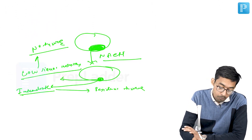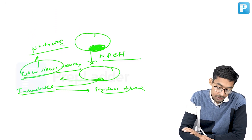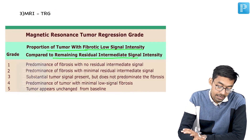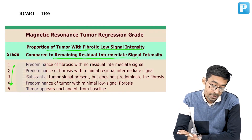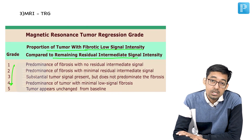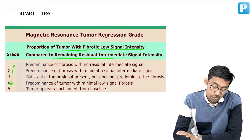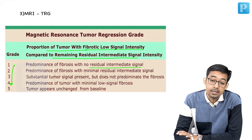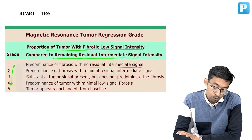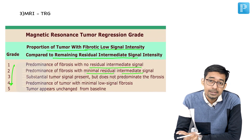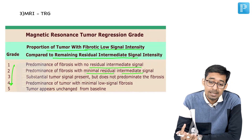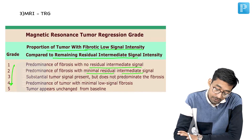Based on the proportion of low signal intensity and intermediate signal intensity, they have graded from 1 to 5. Grade 1 means predominance of fibrosis which shows no residual intermediate signal. Grade 2 means fibrosis with minimal intermediate signal intensity, so there is some tumor but very less. Grade 3 is there is a substantial tumor signal present but it does not predominate the fibrosis.